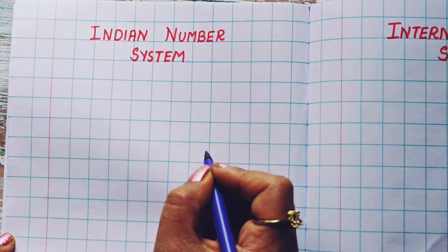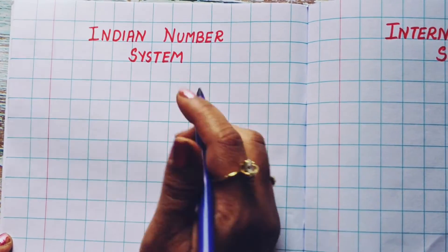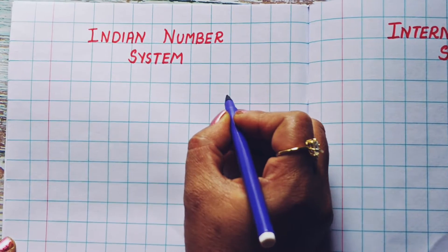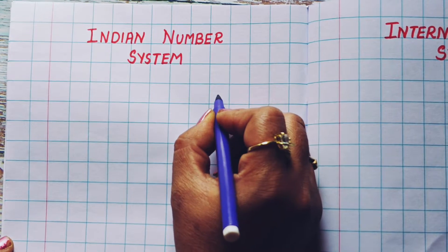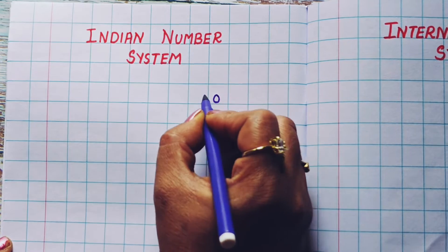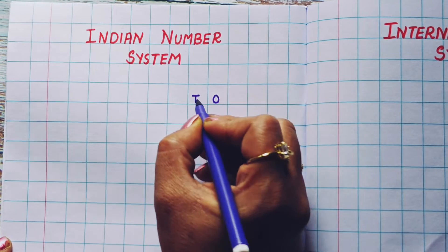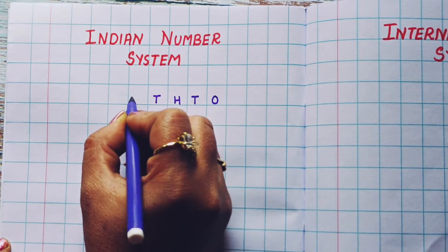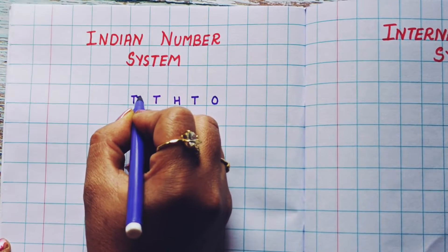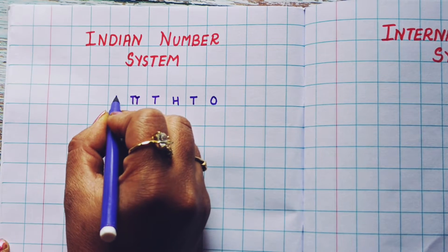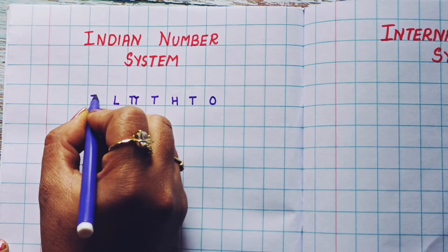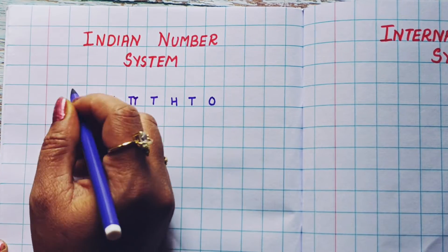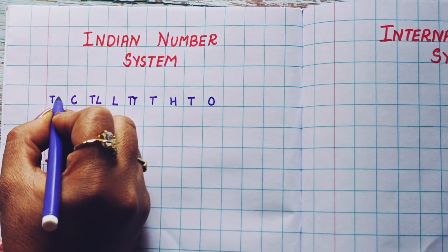First we are going to write the places of the numbers. In the Indian number system, we are going to begin with ones, tens, hundreds, thousands, ten thousand, lakh, ten lakh, crore, and ten crore.